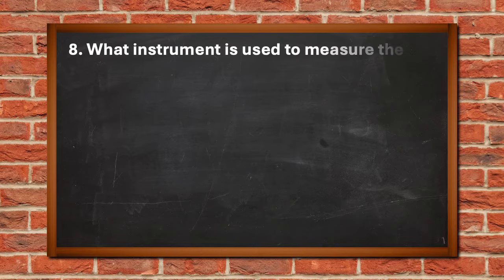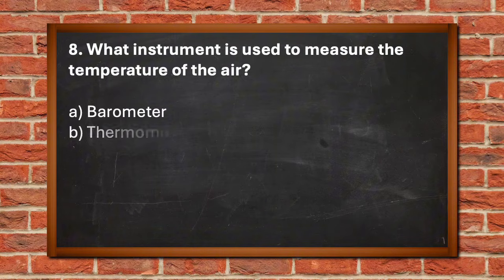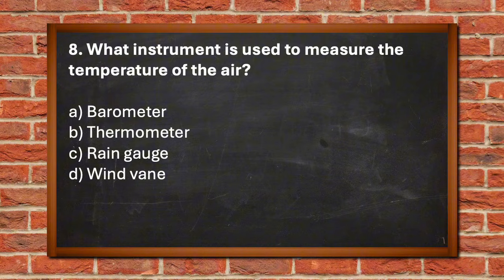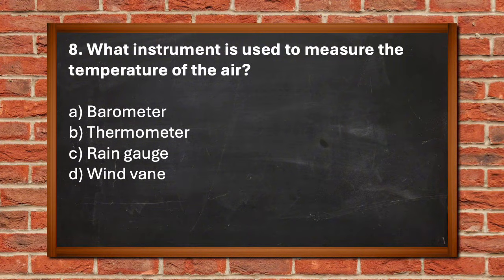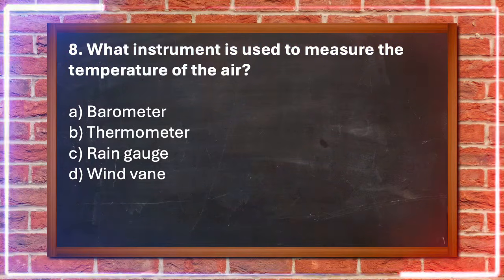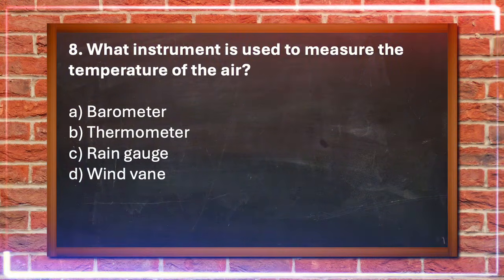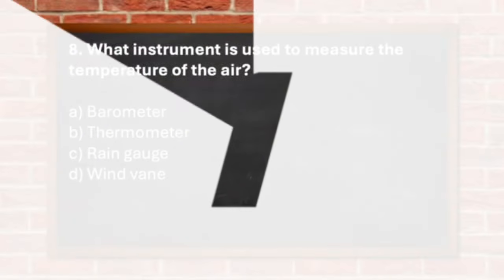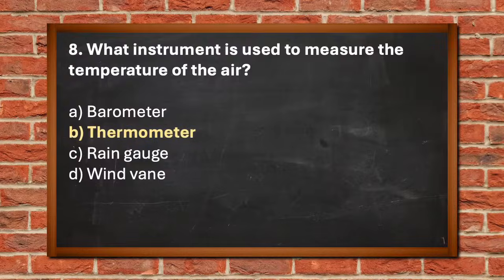Number 8. What instrument is used to measure the temperature of the air? A. Barometer, B. Thermometer, C. Rain gauge, D. Wind vane. The answer is B. Thermometer.